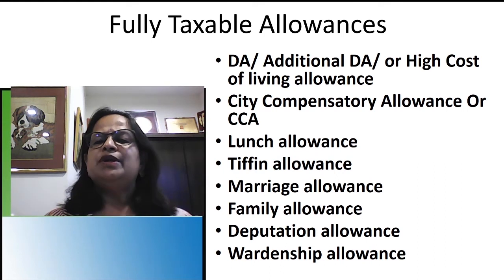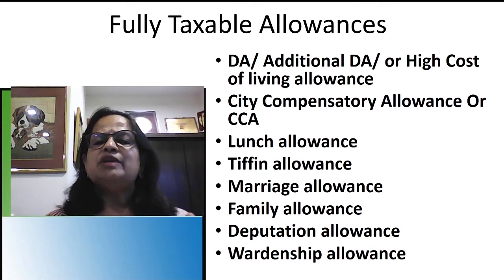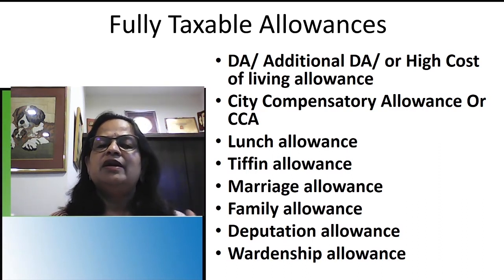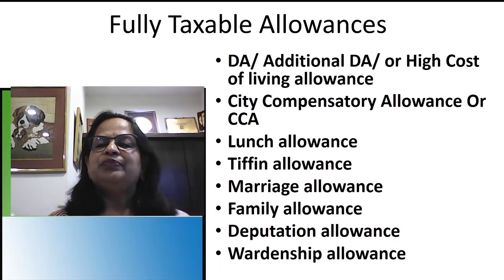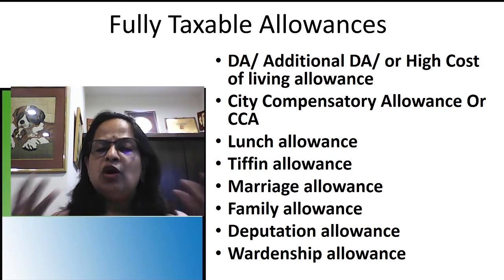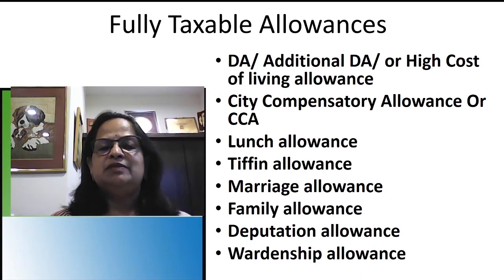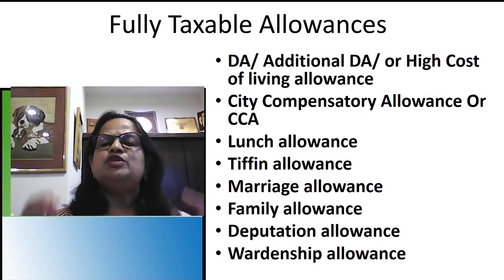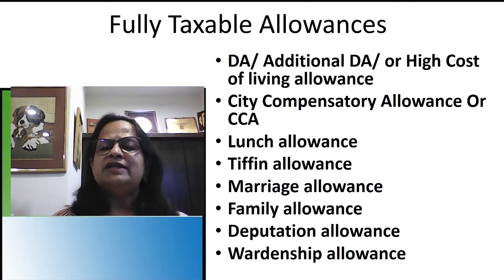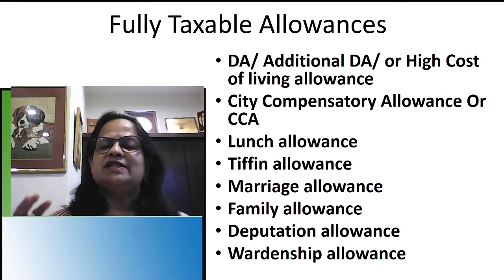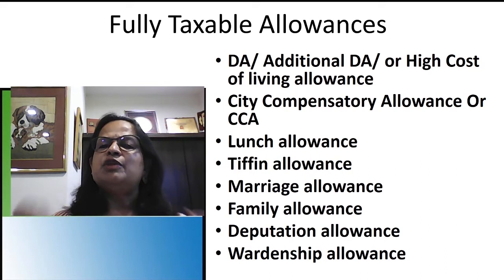City compensatory allowance is fully taxable. It is given to employees working in metropolitan cities like Delhi, Kolkata, Chennai, and Bangalore. Those working in rural areas are not eligible. Lunch allowance, which is a fixed amount given for lunch (separate from meals served during training), is fully taxable. Similarly, tiffin allowance — a fixed amount for snacks or tea — is also fully taxable if given as a fixed sum rather than being served in the organization.